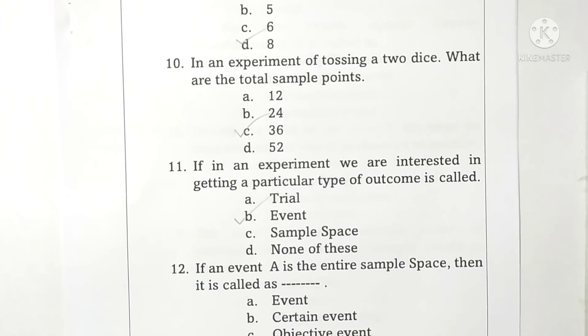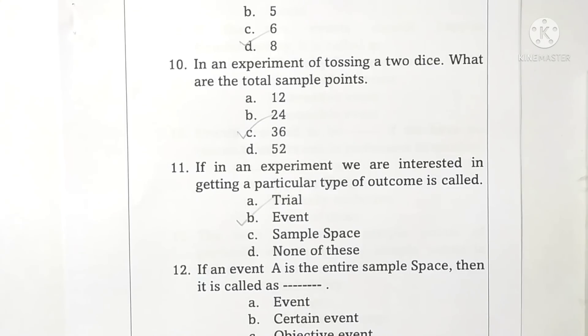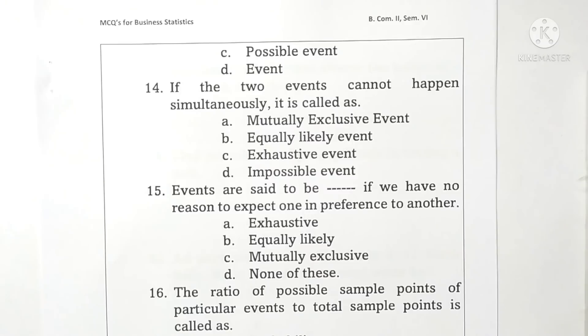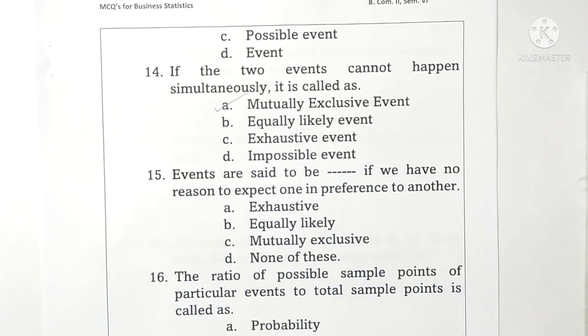Question 11: If in an experiment we are interested in getting a particular type of outcome, it is called an event. Option B is correct. Question 12: If an event A is an entire sample space, it is called a certain event. Option B is correct. Question 13: If an event does not have any sample point, it is called an impossible event. Option A is correct. Question 14: If two events cannot happen simultaneously, it is called a mutually exclusive event. Option A is correct. Question 15: Events are said to be equally likely if we have no reason to expect one in preference to another. Option B is correct.